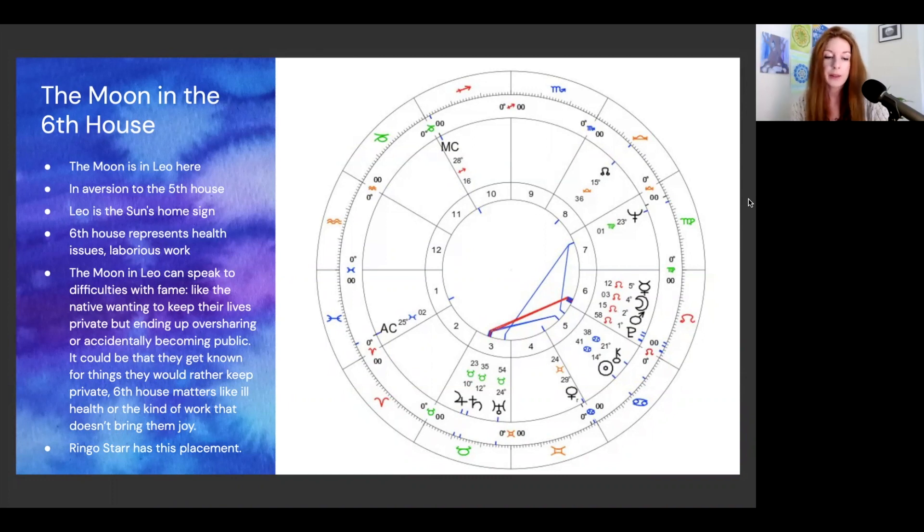Ringo Starr had this placement, and that's whose chart this is. Also potentially Paul McCartney, but I believe his birth time is questionable. On the health front, Starr was afflicted by life-threatening illnesses during childhood with periods of prolonged hospitalizations. As you see, he's also got Mars and Pluto in the sixth, so potentially difficulties there anyway. Some of those issues actually continued throughout his life.